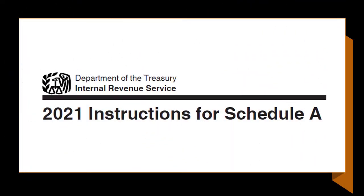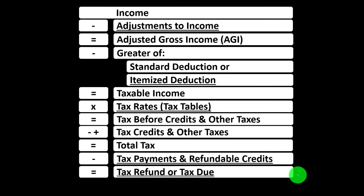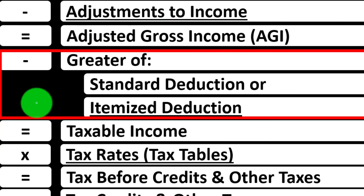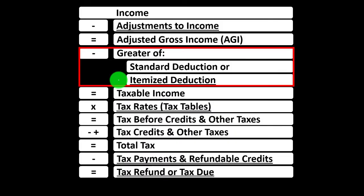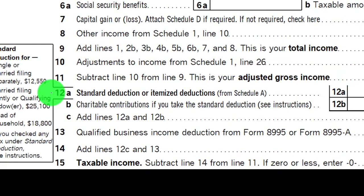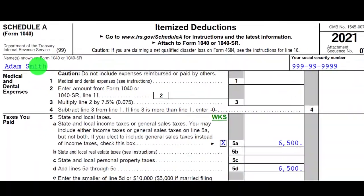Most of this information can be found on the Schedule A instructions, tax year 2021, on the IRS website at irs.gov. Looking at the income tax formula and the itemized deductions, keeping them distinct from the adjustments to income — the above-the-line deductions, deductions for AGI — noting that the itemized deductions will only be taken if greater than the standard deduction.